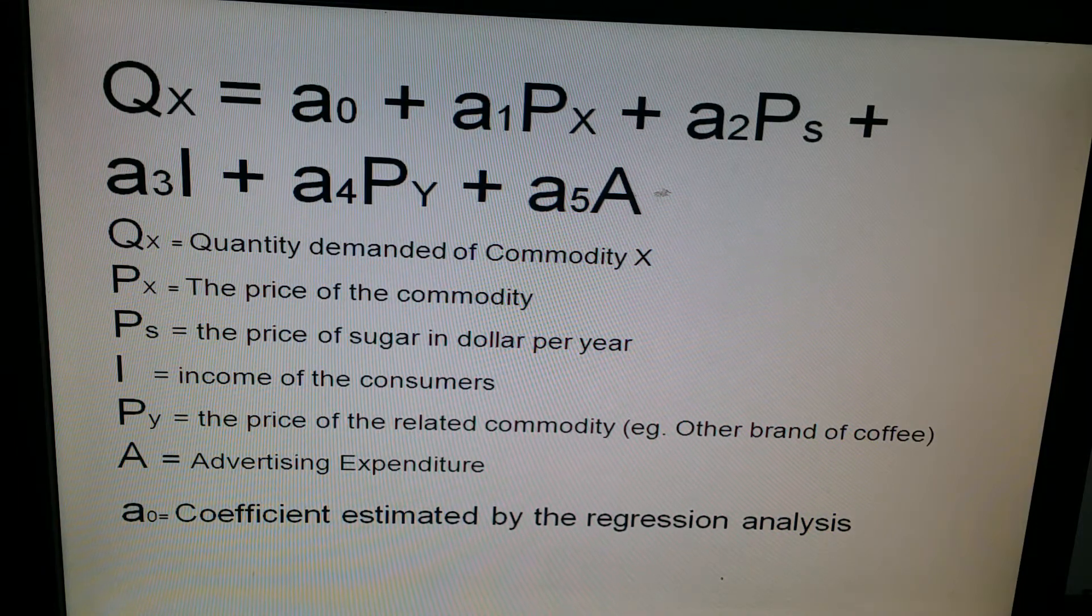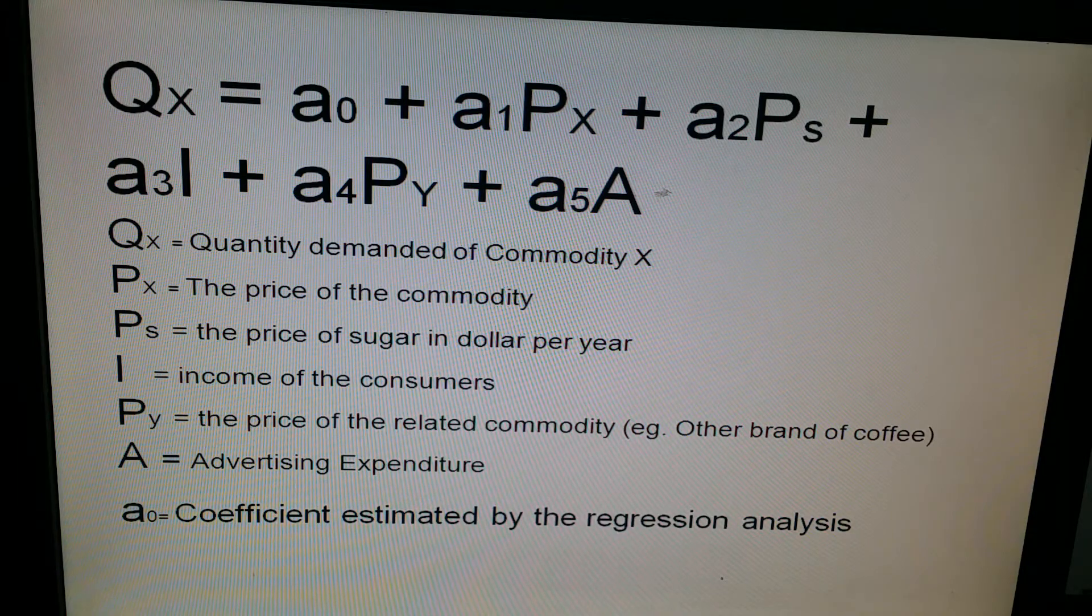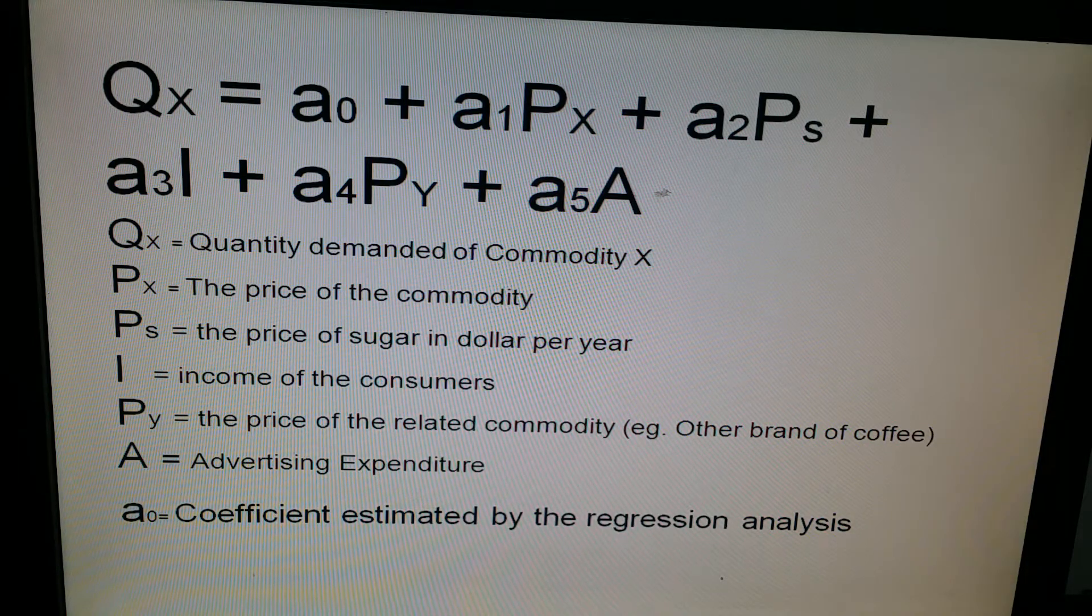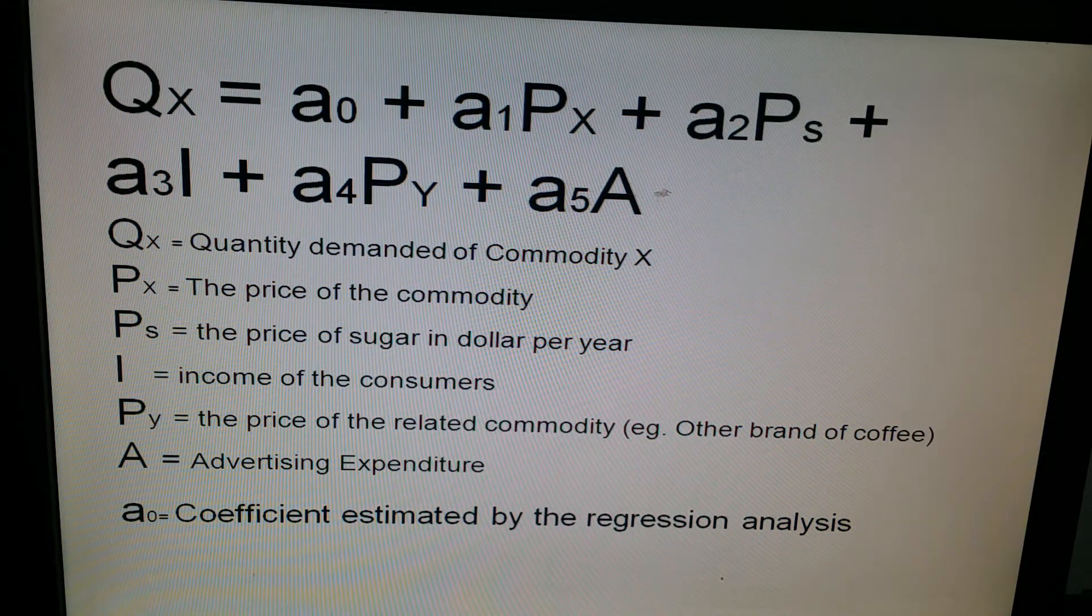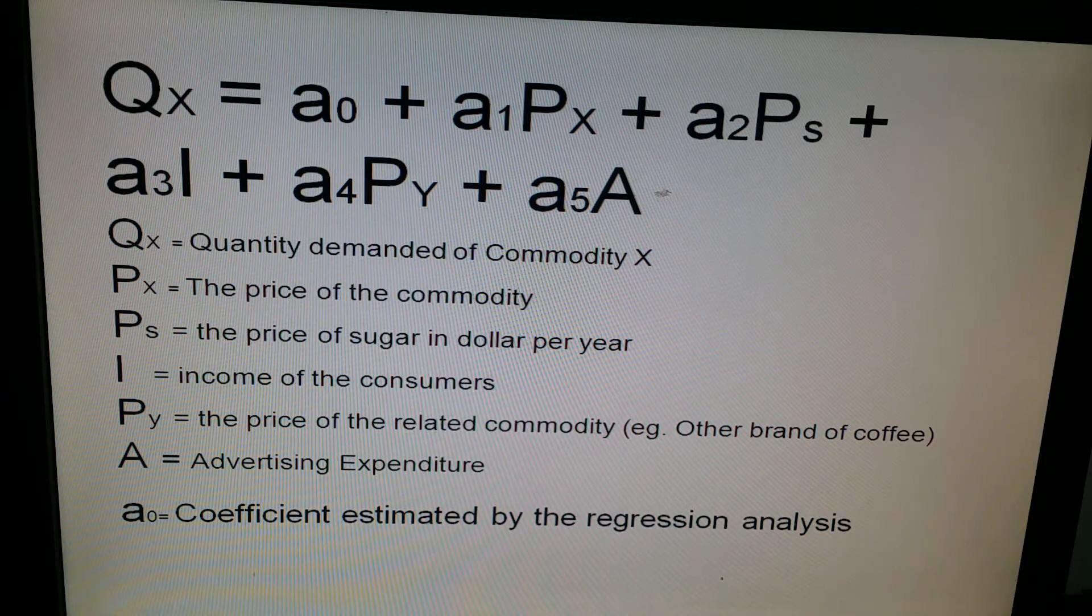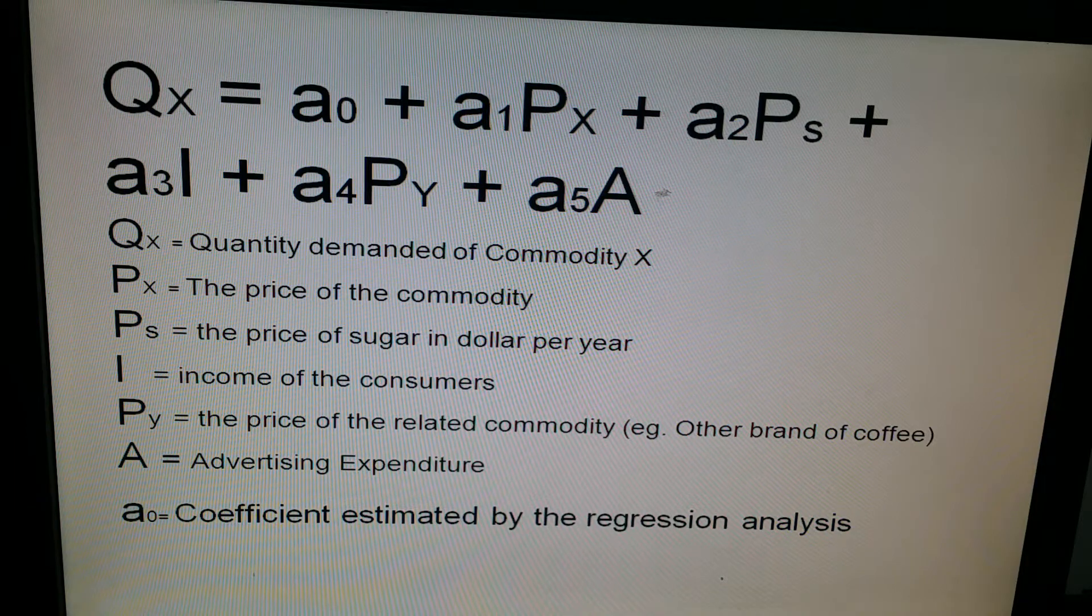But in the real world, those other factors are not constant. We'll have to take those other factors into account also, the non-price determinants. So let's say that this product, the demand for this product X, is dependent upon the price of a substitute product, which in this case is sugar, but let's say substitute product.